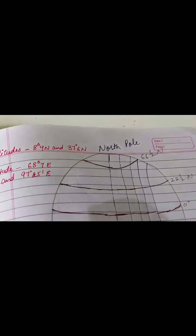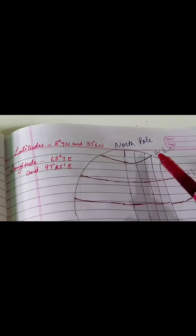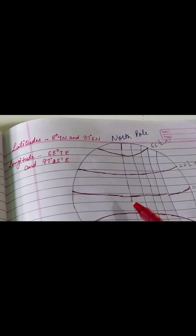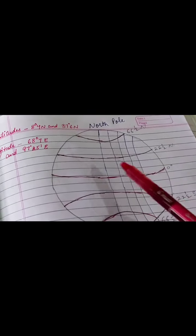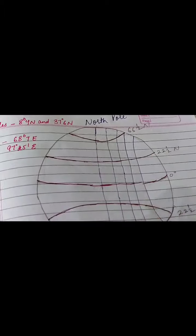This is your globe. These are your imaginary lines which I have drawn — these are your latitudinal lines. This is your equator. This is your north pole and this is your south pole. Then these are your longitudinal lines.